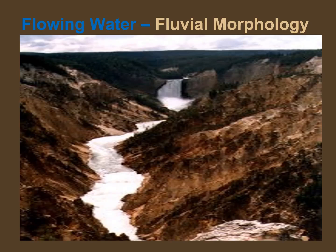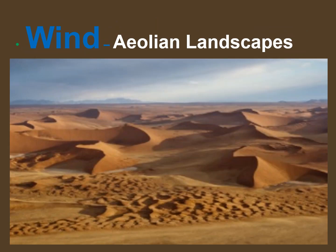Under erosion, we have geomorphic agents. The first is flowing water, called fluvial morphology. Fluvial landforms are those generated by running water, mainly rivers. The term 'fluvial' derives from the Latin word 'fluvius,' meaning river. Another agent is wind, which produces aeolian landforms — features produced by either the erosive or constructive action of wind. These features may be built up from sand or snow, or eroded into rock, snow, or ice.